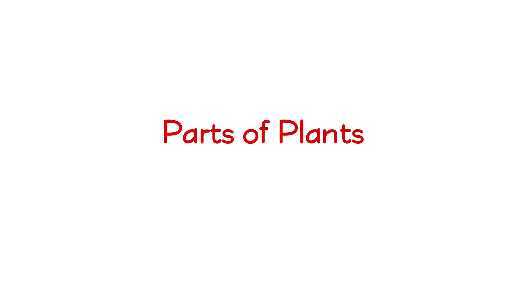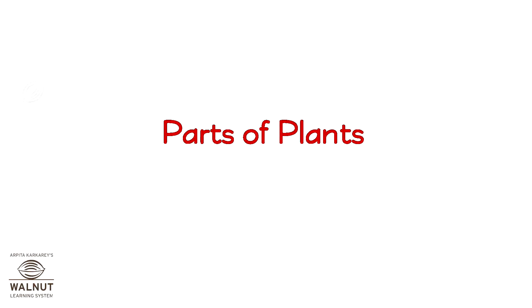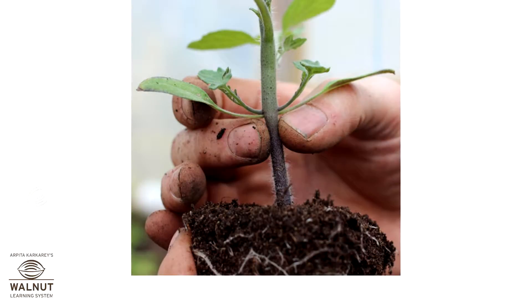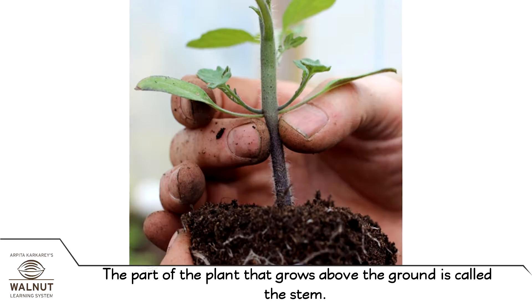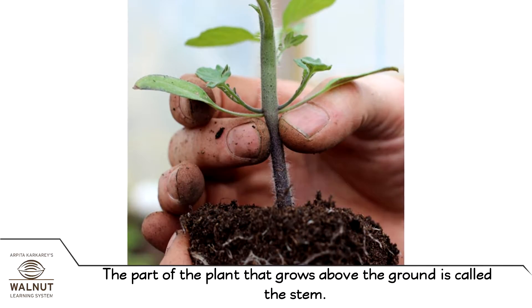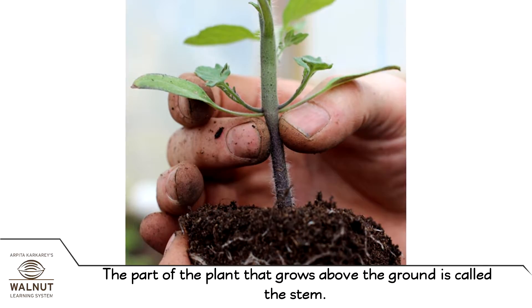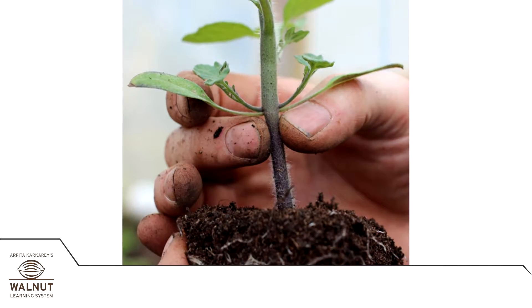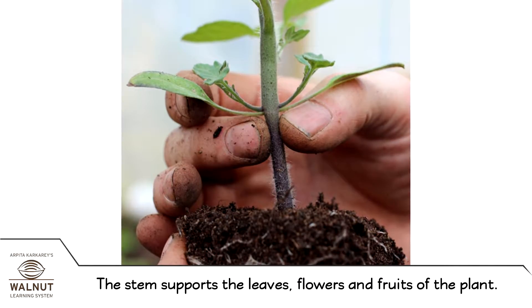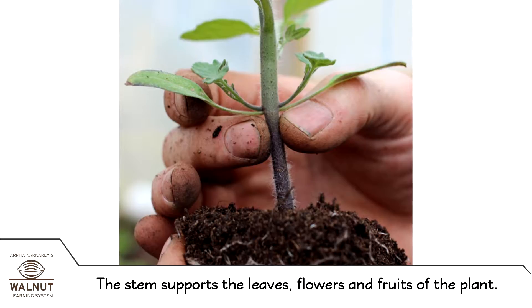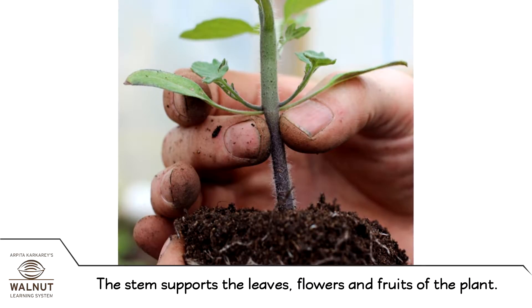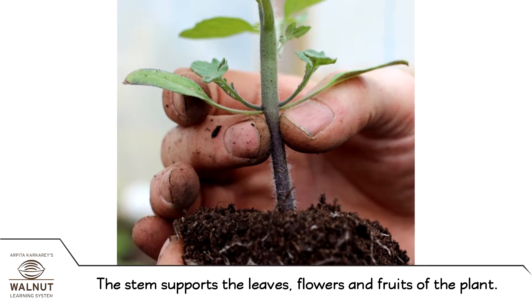Parts of Plants: The stem. The part of the plant that grows above the ground is called the stem. The stem supports the leaves, flowers and fruits of the plant.